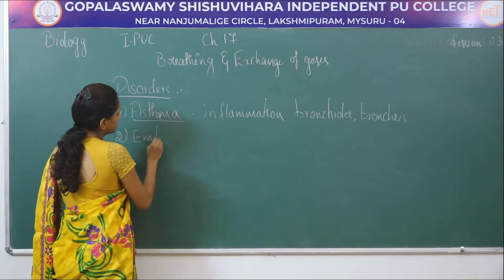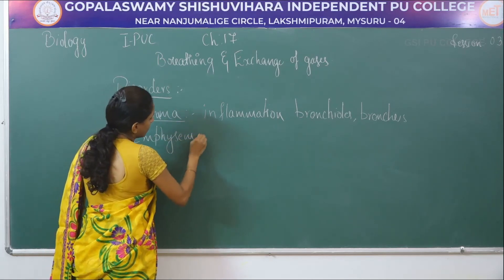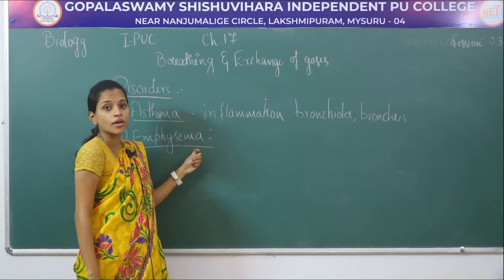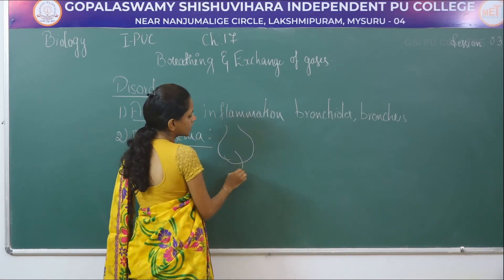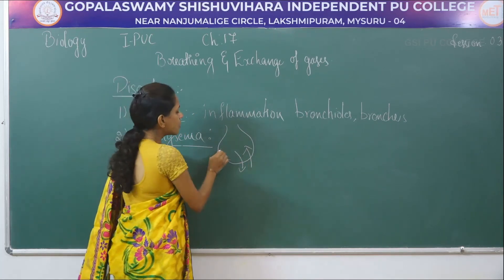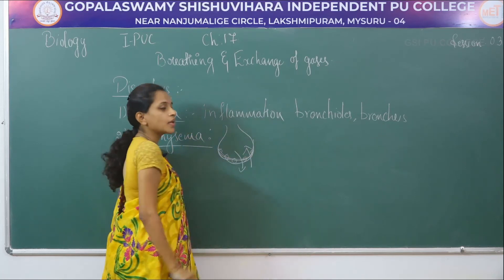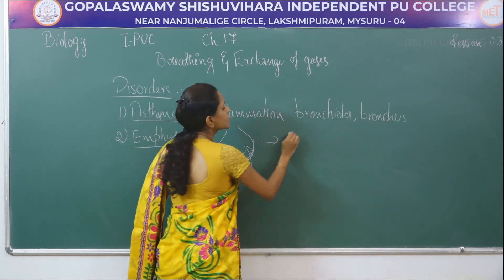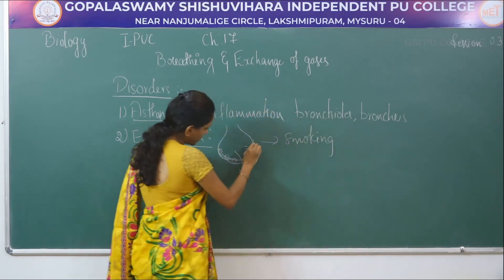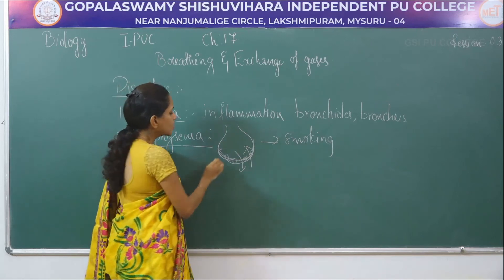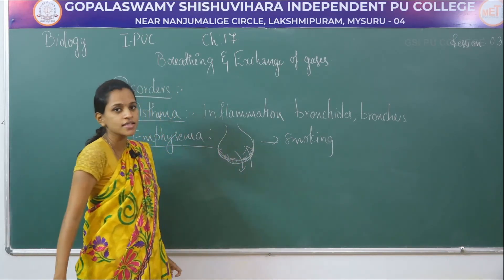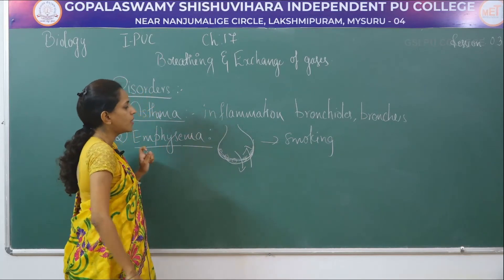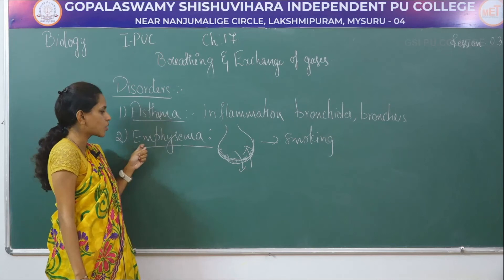The next disorder is emphysema. Emphysema is a respiratory disorder due to blockage in the alveoli, the region where exchange of gases takes place. This blockage causes improper exchange of gases, leading to breathing disabilities. It is mainly caused by cigarette smoking — due to deposition of nicotine in the alveoli, free exchange of gases is impaired, leading to breathing problems.